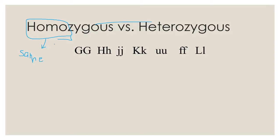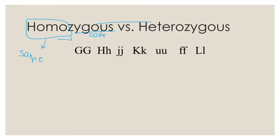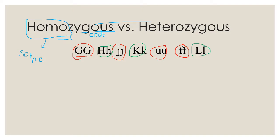And zygous means code. So if you're homozygous, you have the same code — the two letters that you have look the same, so they would both be dominant or uppercase, or they would both be recessive or lowercase. Heterozygous is very similar — we're talking about a different code, so you might have one dominant and one recessive. Examples of homozygous would be big G big G, little j little j, little u little u, little f little f — those are all the same that go together. Everything that's left would be heterozygous, and you can tell the difference because they have one uppercase and one lowercase, meaning they have one of each version of that gene, of that trait.